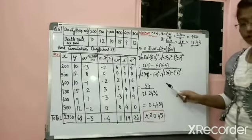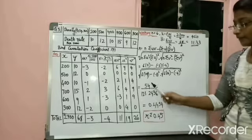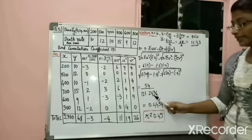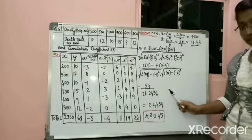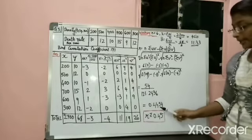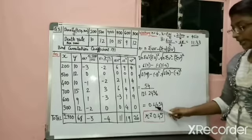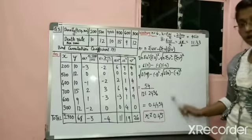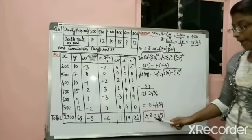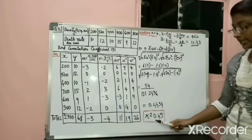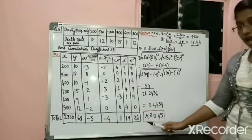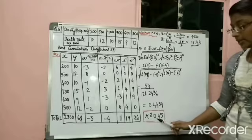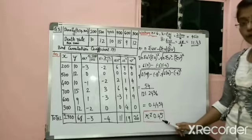After calculating you would get 54 divided by 120.2436 (approximately). After dividing you would get 0.4454. Rounding it up, your correlation coefficient r = 0.45.